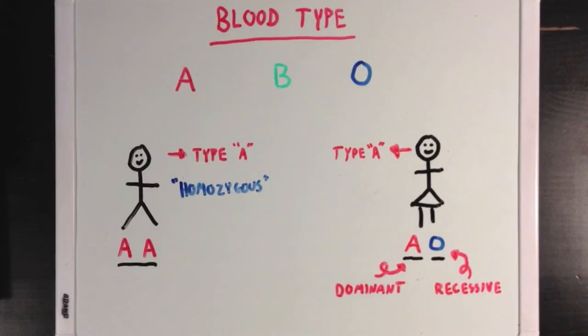Now since this girl has two different alleles, we call her heterozygous, since hetero means different. And zygous refers to the same thing, the mixture of DNA that she got from her parents.